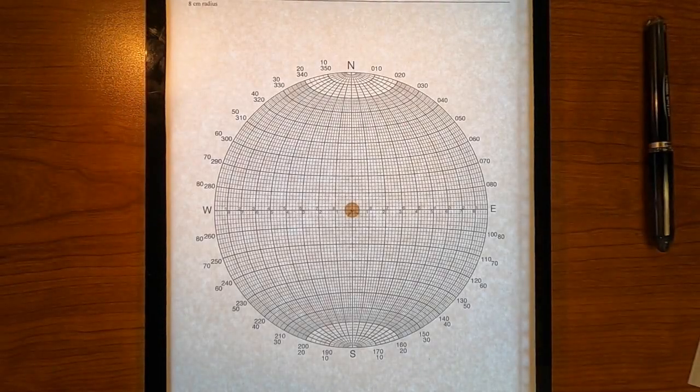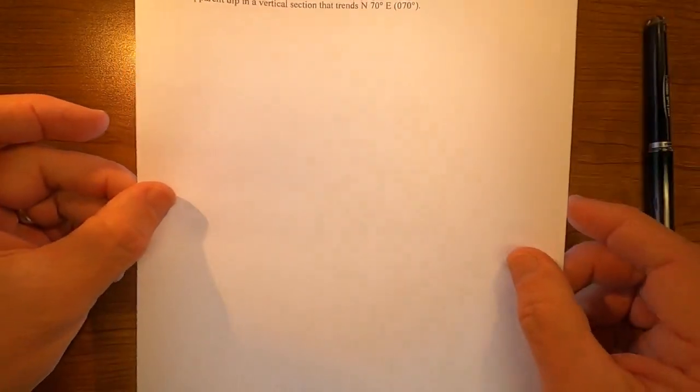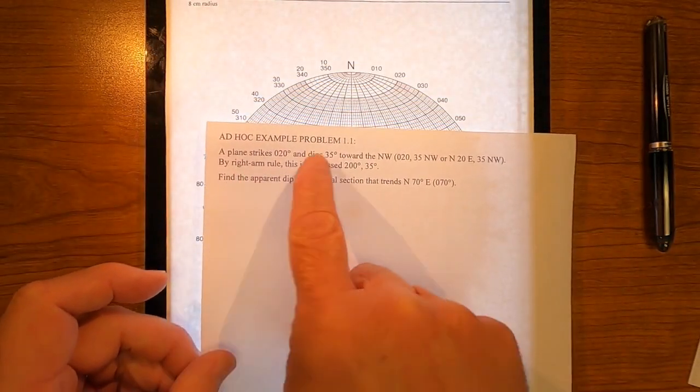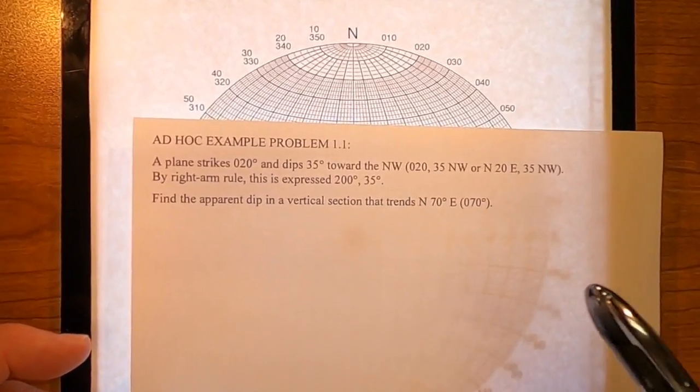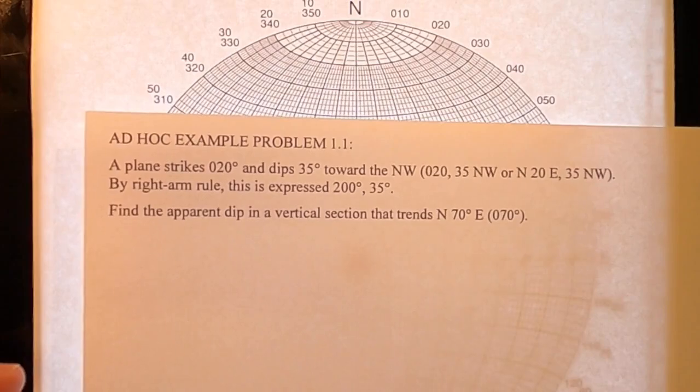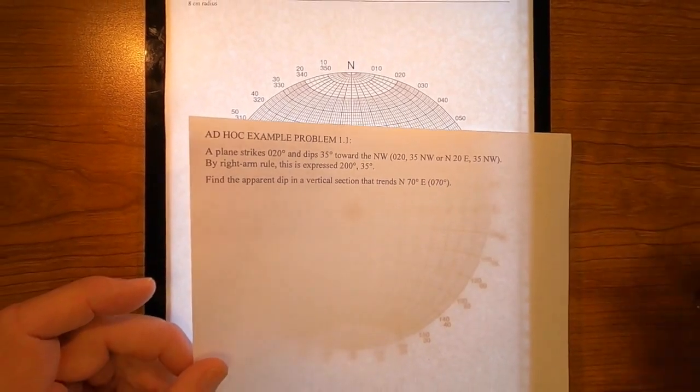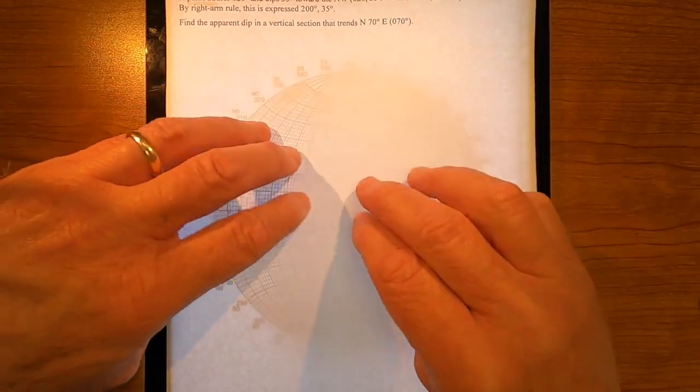Let's go ahead and do my ad hoc example problem. They're just variants. So you recall the ad hoc example problem 1.1 is this one. It's similar to example problem number one. In this case, the dip is in the opposite direction. The dip is to the northwest. Otherwise, it's the same problem. So let's do this one and see how it would be done.